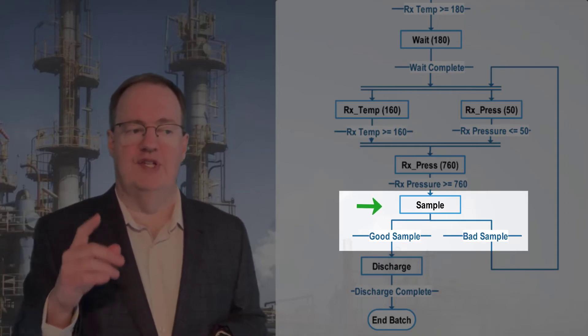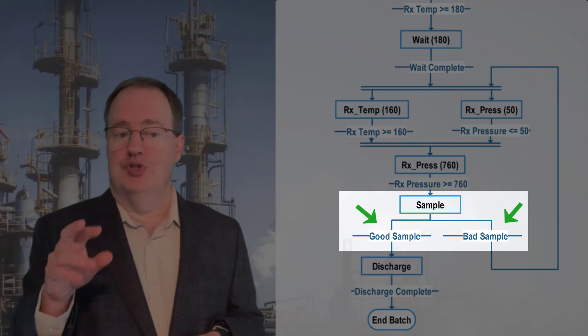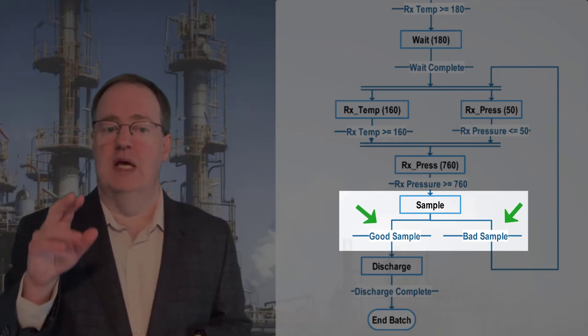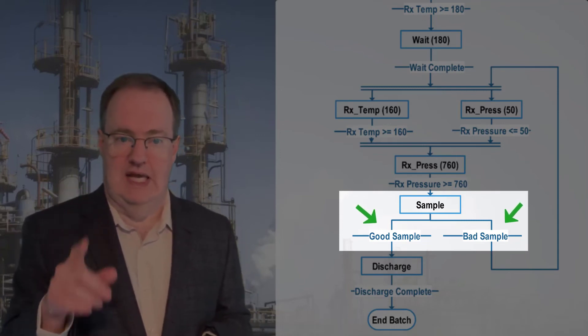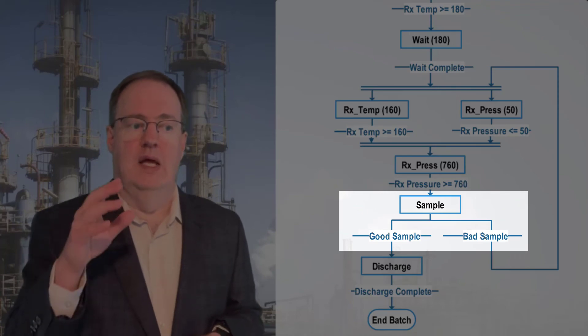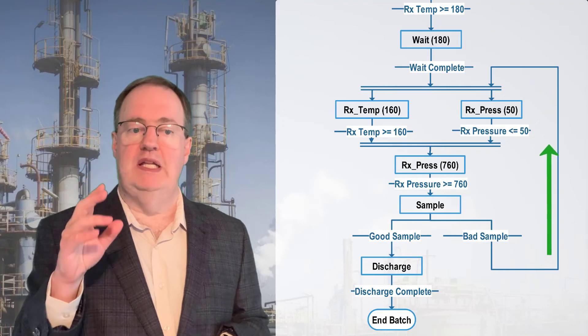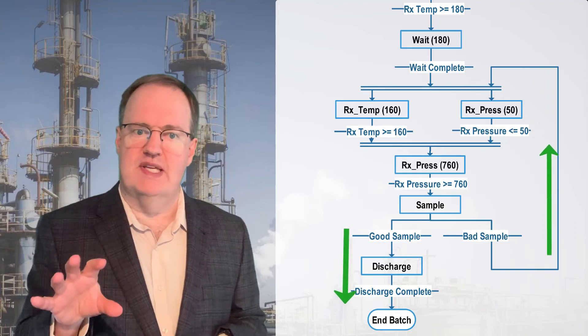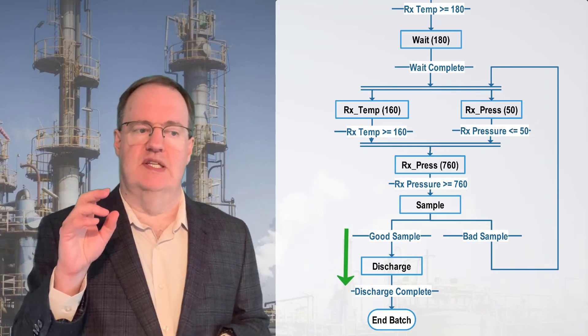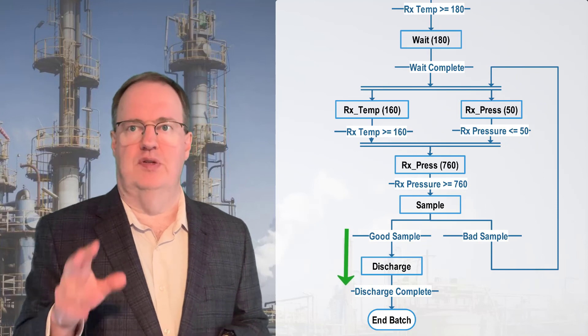At this point, we have a decision. So the batch branches to two mutually exclusive transitions based on the sample lab results. The bad sample path leads back up to where we stripped to repeat that step. The good sample path executes the discharge phase to empty the reactor.